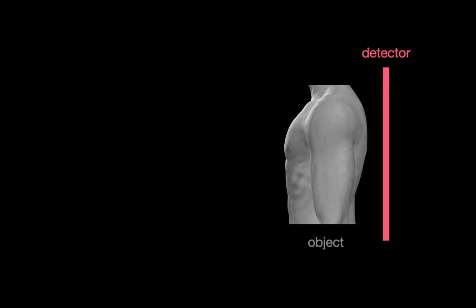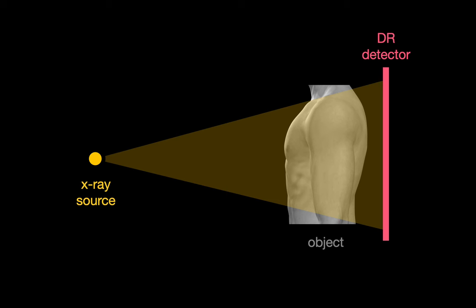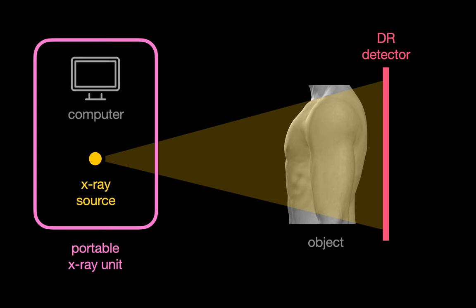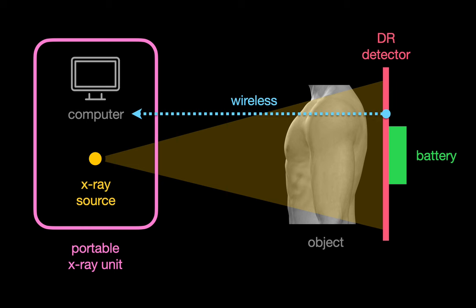Most modern portable x-ray systems are composed of a DR detector panel, an x-ray tube, and a computer. The DR detector panel is powered by a rechargeable battery and can transfer x-ray images wirelessly to the computer, which itself can upload that portable chest x-ray image to the hospital-wide PACS system via Wi-Fi so that anyone in the hospital can immediately see the patient's portable chest x-ray image on their computer.